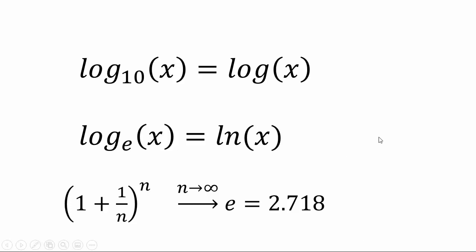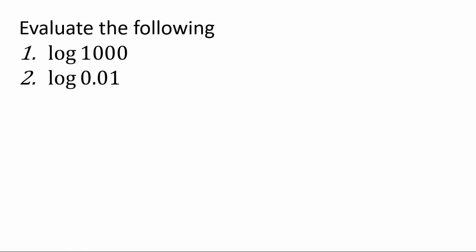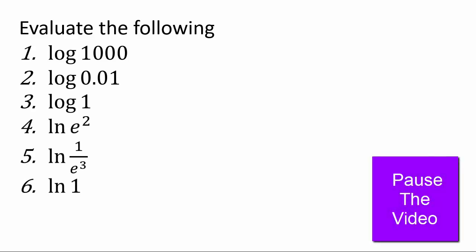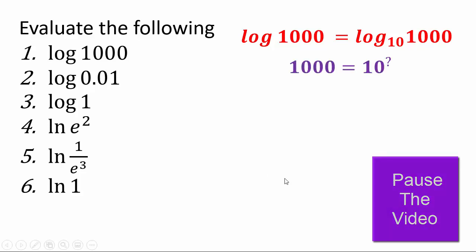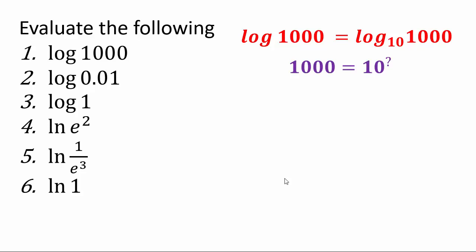Let's use that notation and do a few problems. Pause the video and try to evaluate the following. Remember: log with no base written is base 10. So log of 1,000 is really log base 10 of 1,000 — you're asking 1,000 equals 10 to what power, which is 3. For log of 0.01, you get negative 2 because 10 to the negative 2 is 0.01. Log of 1 in base 10: since 10 to the power 0 is 1, you get 0.